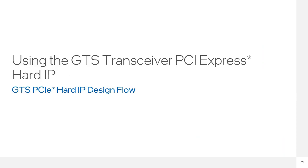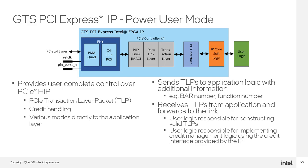Now that we understand the GTS transceiver PCIe hard IP architecture, let's look at the process for designing with one. To configure the GTS PCIe hard IP for your design, you will use the GTS PCI Express IP. As you can see, the IP wraps around all of the PCIe hard components in the GTS transceiver along with an IP core soft logic block, shown in orange on the right, that interfaces with your user logic in the FPGA fabric.